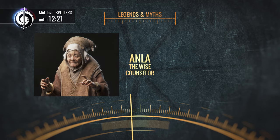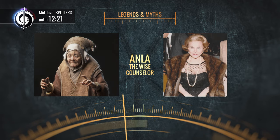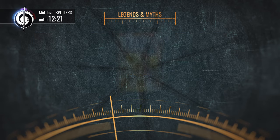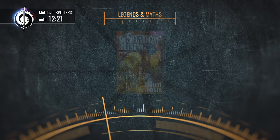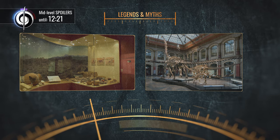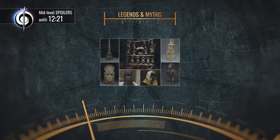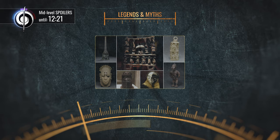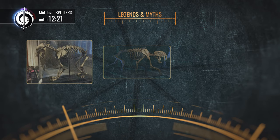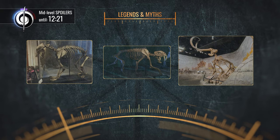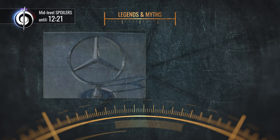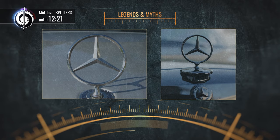Anla the Wise Counselor was confirmed by Robert Jordan to be Ann Landers, the popular newspaper columnist who shared advice for over 50 years during the 20th century. At one point in Book 4, The Shadow Rising, a character enters a museum in the Panarch's palace in Tanchico, where there are multiple ancient artifacts and skeletons of lost creatures from ages past. Specific references include a skeleton that appears to be a giraffe or long-necked dinosaur, another skeleton like a bear but with large boar-like fangs, and a relic described as looking similar to the hood ornament of a Mercedes-Benz car, which gives off a sense of pride and vanity.